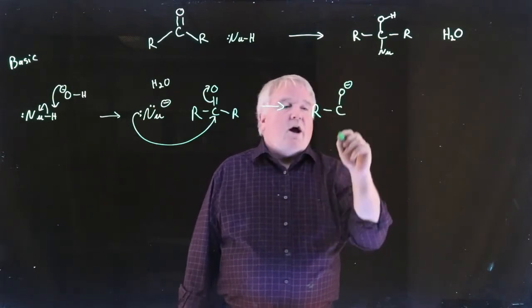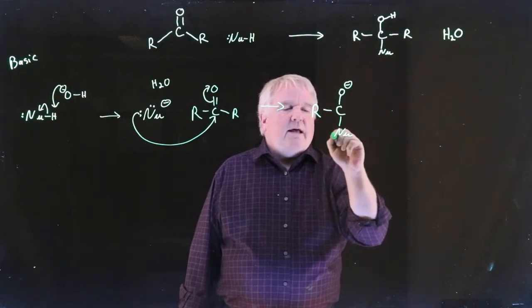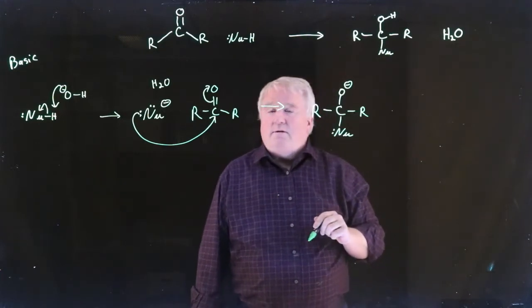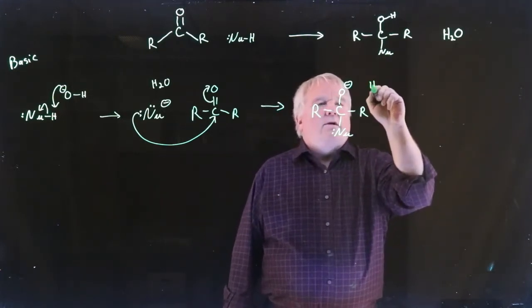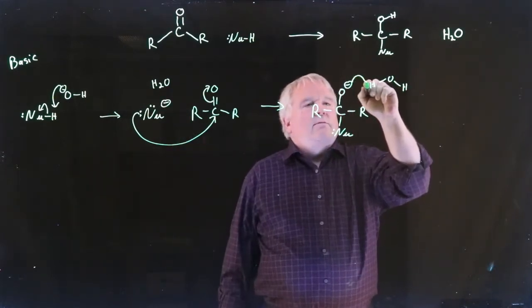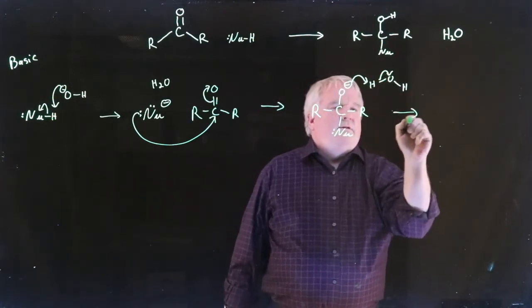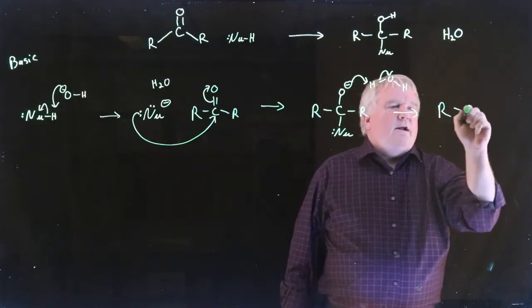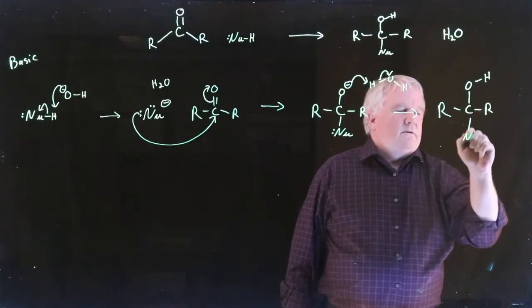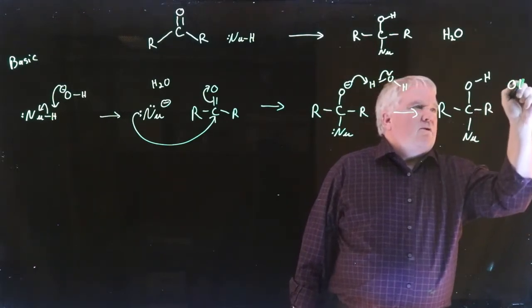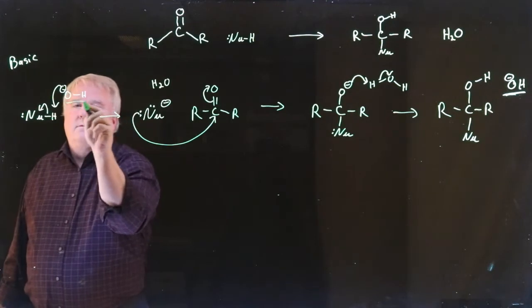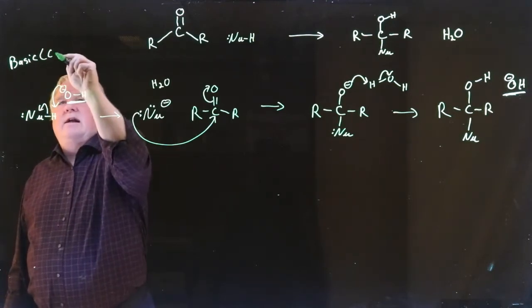So we get this negatively charged oxygen species. Our nucleophile is now attached to the carbon which was formerly the carbonyl carbon. And don't forget we have our water molecule is still around. I just carried that over to here. Now we can pull that off and we end up with our final product. And look what we reform at the end: hydroxide. So we only need a catalytic amount of base.